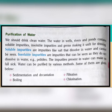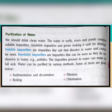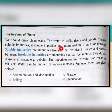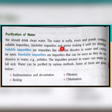Today let us discuss the remaining topic of this chapter, which is about purification of water. Why purification? It is important because we should drink clean water. If water is not clean properly, then drinking that water may cause various diseases in our body. The water in wells, rivers, and ponds contains some impurities — some of those impurities are soluble and some are insoluble — and along with impurities, germs may also be there.